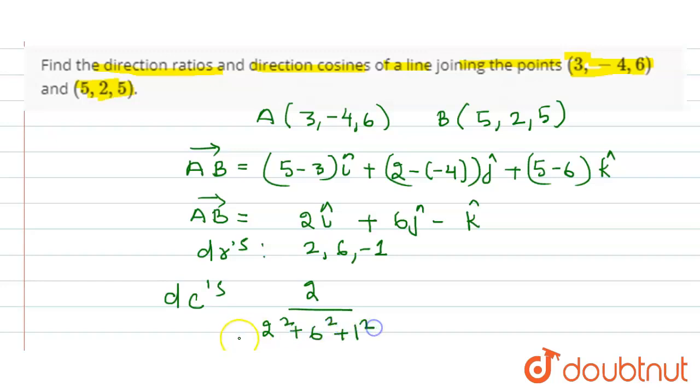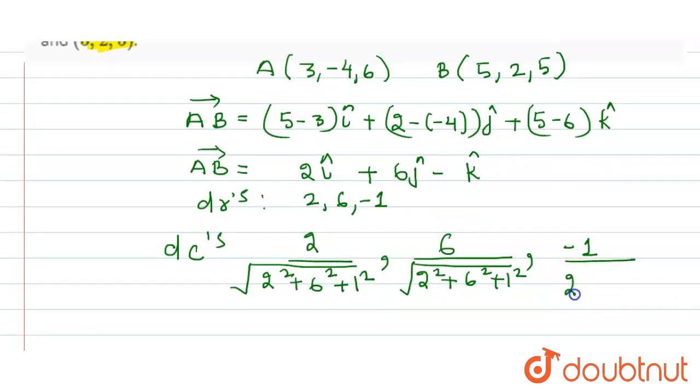Similarly, the other component will have the value of the direction cosine that is 6 divided by the magnitude, that is square root of 2 squared plus 6 squared plus 1 squared. Similarly, the z component of the direction cosine is -1 upon the magnitude, that is square root of 2 squared plus 6 squared plus 1 squared.